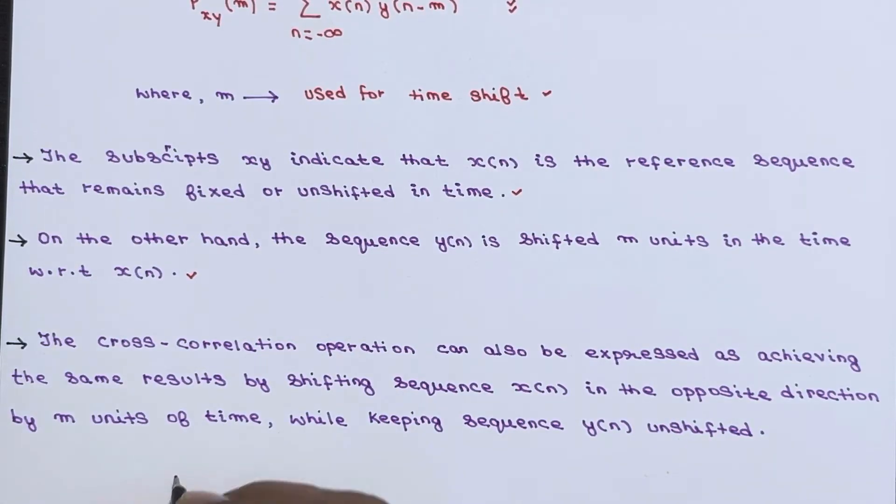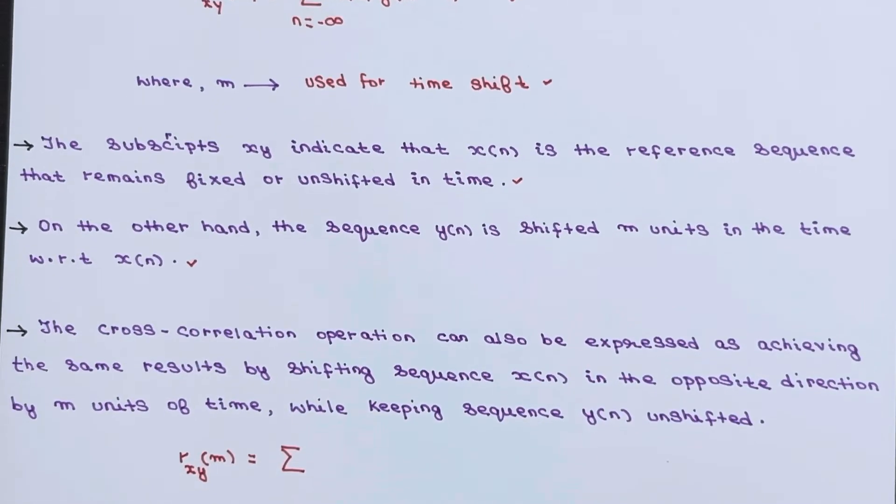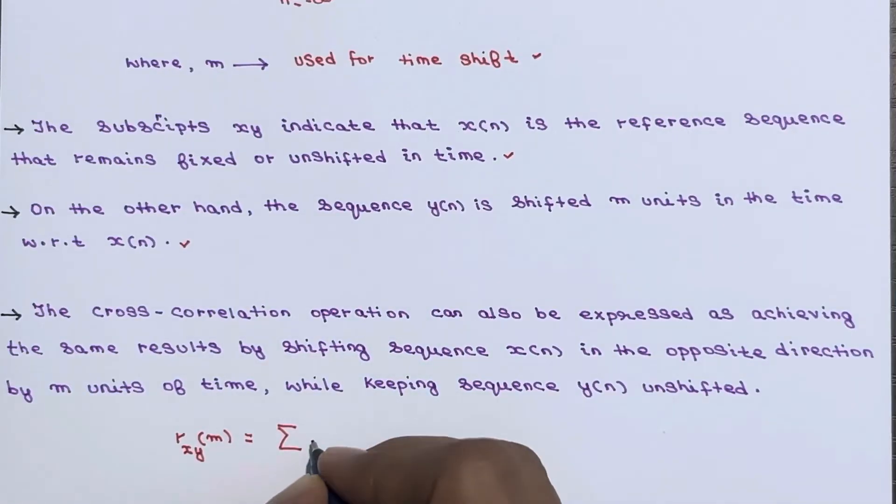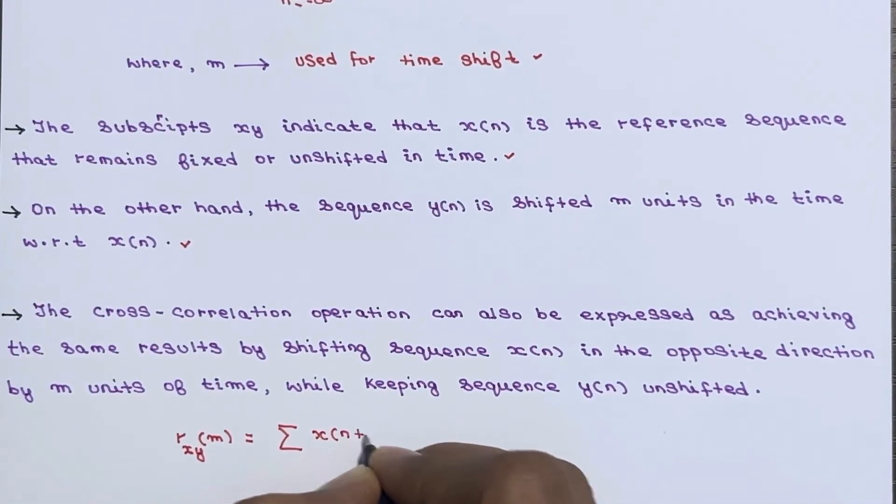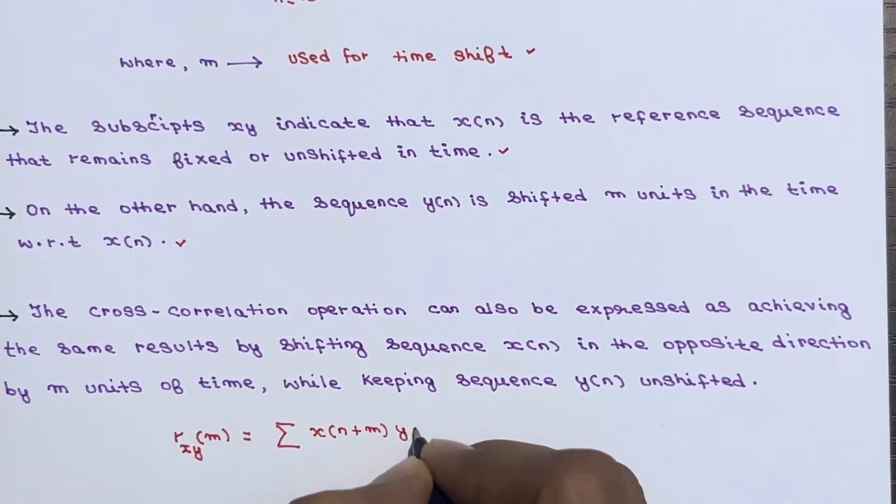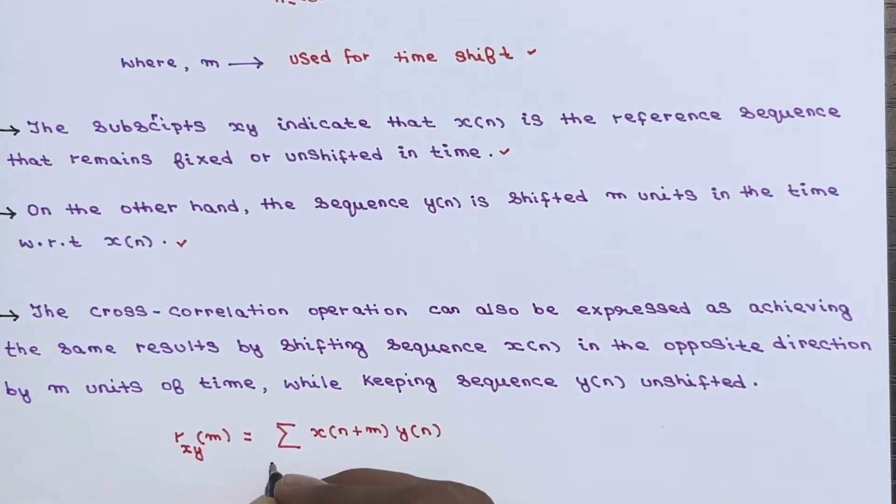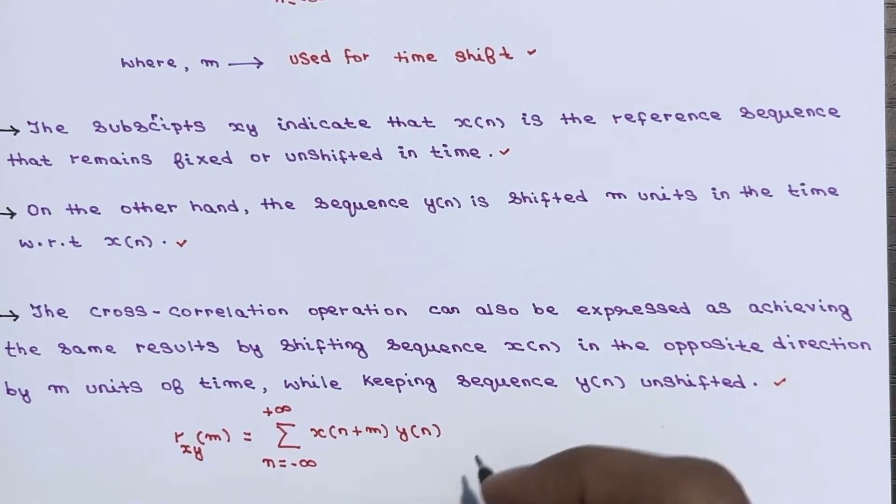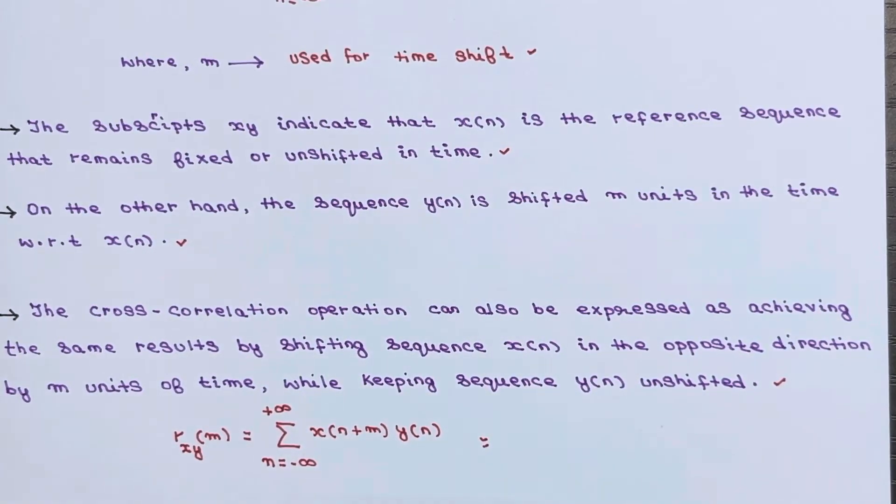This time y of n will be unshifted. So in this case, the formula will be r xy subscript function of m. So r of m you can say this will be equal to summation of x of n plus m into y of n where the limit of n ranges from minus infinity to plus infinity. So here if you see this x of n is shifting sequence this time and y of n is unshifted. So this formula is also fine. I hope this much is clear to you.